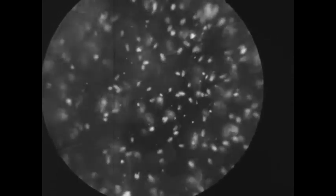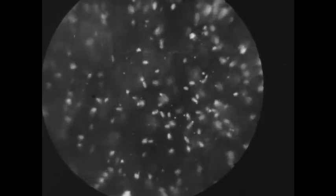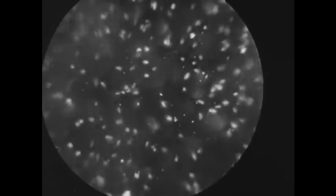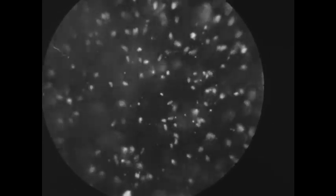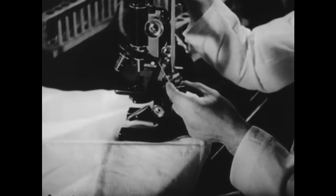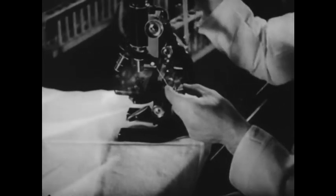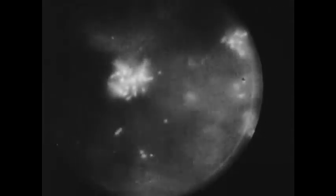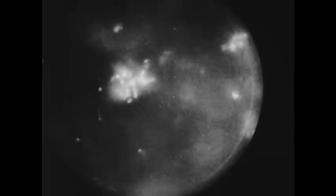Here we see typhoid bacilli moving about freely. Note how they rebound when they strike each other. This is because they have identical electrical charges which mutually repel. We shall introduce a drop of serum which contains antibodies to the typhoid bacilli. Now note how these bacteria have collided and stuck together, gradually building up large clumps.